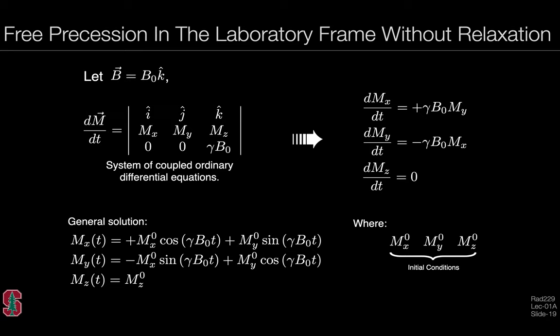The general solution follows. MX as a function of time depends on the initial condition along the X direction and a cosine function, and the initial condition along the Y direction and a sine function. It looks similar for the MY component and quite different for the MZ component. The MZ component suggests that MZ as a function of time just depends on whatever the initial condition was. If you have some background in MR, you'll recognize that at this point we're not including the concepts of relaxation—something we'll develop later.